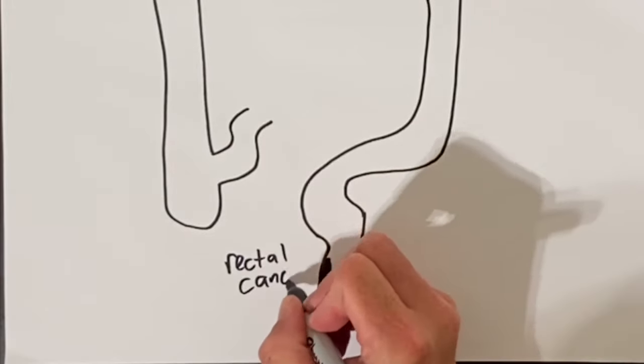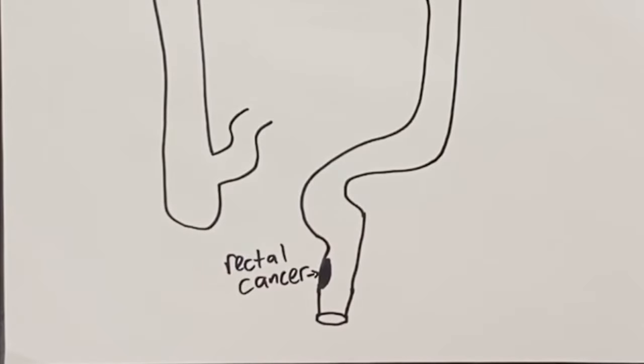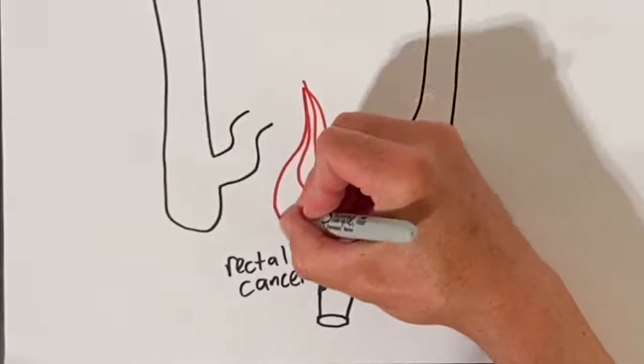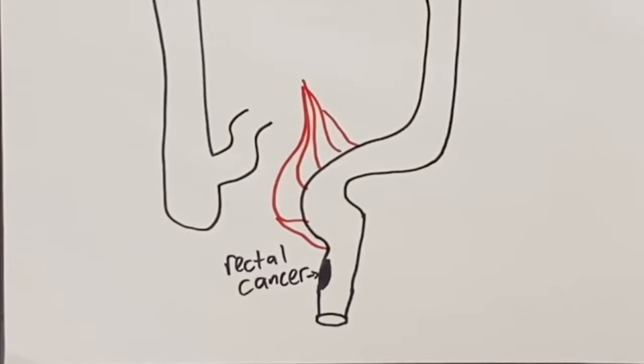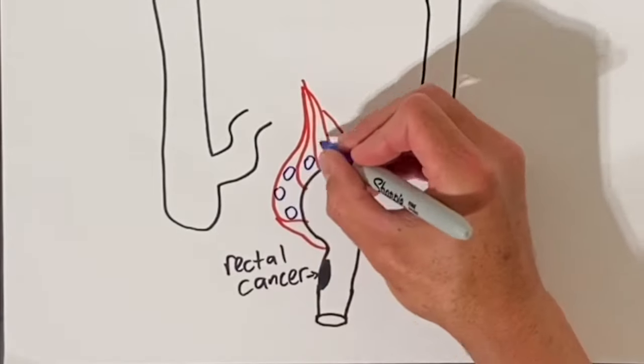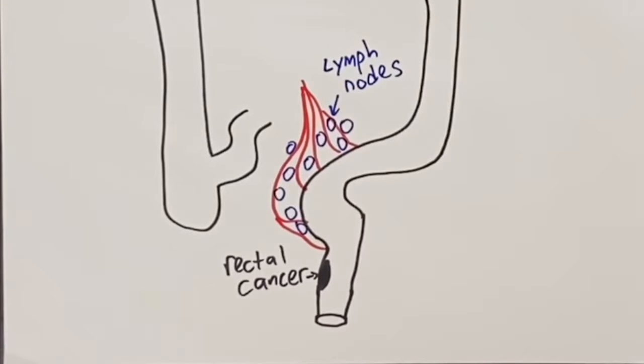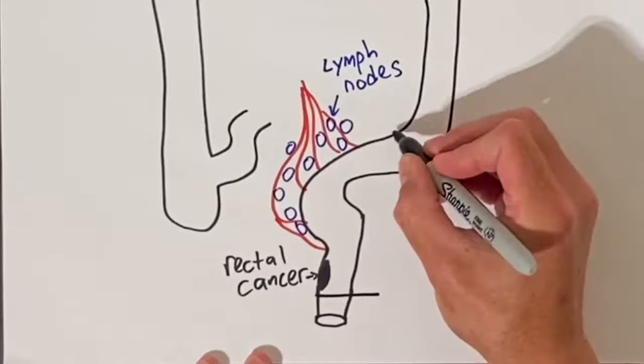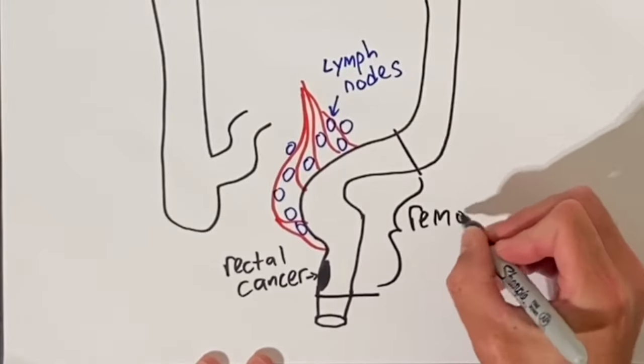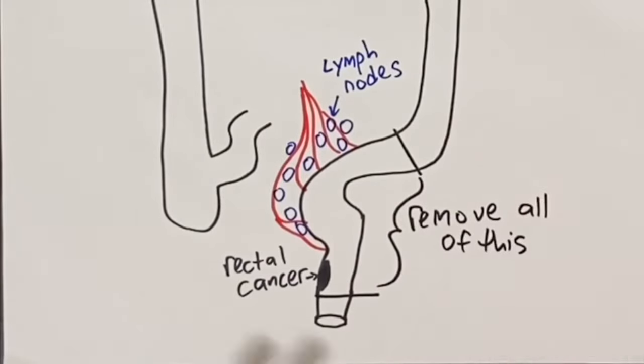For rectal cancer surgery, we want to remove at least 12 lymph nodes. Rectal cancer drains to lymph nodes all the way up by the sigmoid colon. The lymph nodes are intertwined with the blood vessels supplying the rectum and lower sigmoid colon. In order to remove the 12 lymph nodes, we usually have to remove about one foot or more of the end of the sigmoid and rectum to at least two centimeters below the rectal cancer.